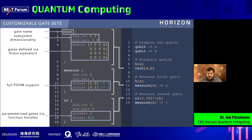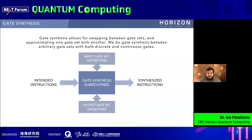Similarly for measurements, we enable these in as general a way as possible by giving a list of POVM elements. This allows us to express as general an instruction set as is reasonably possible with a quantum computer, at least under a Markovian assumption, meaning we can use our system to program essentially any kind of device. We've been building the capability to synthesize between one instruction set and another — having an input gate set and an output gate set and using gate synthesis to go from a program written with one set to a program expressed in the other, allowing us to change between different instruction sets for different kinds of processors.